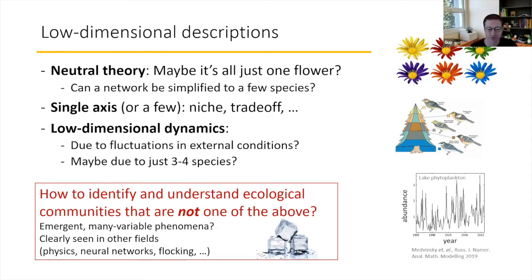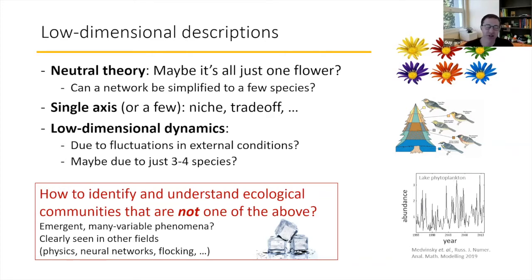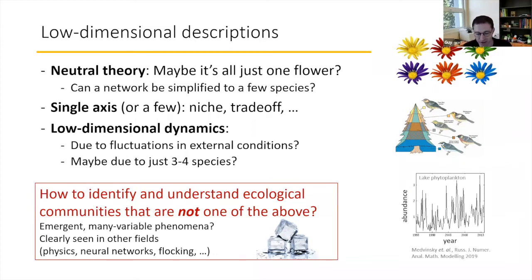Instead, you ask yourself: what would be there instead? We know in other fields — physics, neural networks, flocking — that there are emergent many-variable phenomena, what in physics you call many-body physics. Somehow in ecology, and community ecology specifically, it seems harder to see. It's less obvious. Anytime you see water, if ice melts, you're seeing something like a phase transition — an emergent many-variable phenomenon. Why are we not seeing it so easily in ecology?